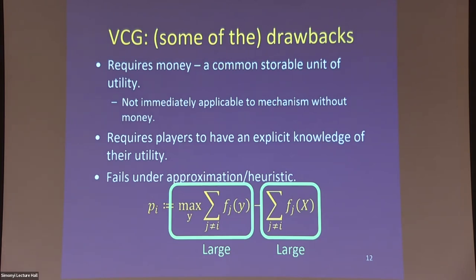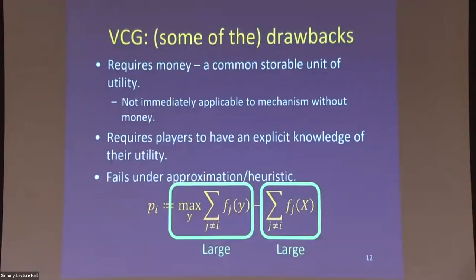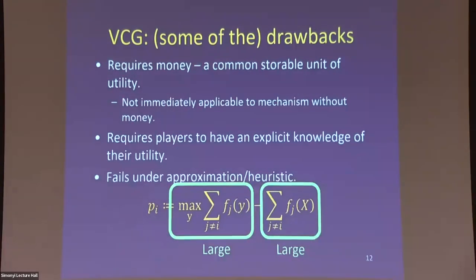The philosophical reason is that VCG is basically 'selling the business to player i' — you tell each player: it's your job to make the world happy, do it the best you can, and keep the difference. Because of that, it's completely incompatible with large-scale practice. It's supposed to solve mechanism design but is rarely used in practice.